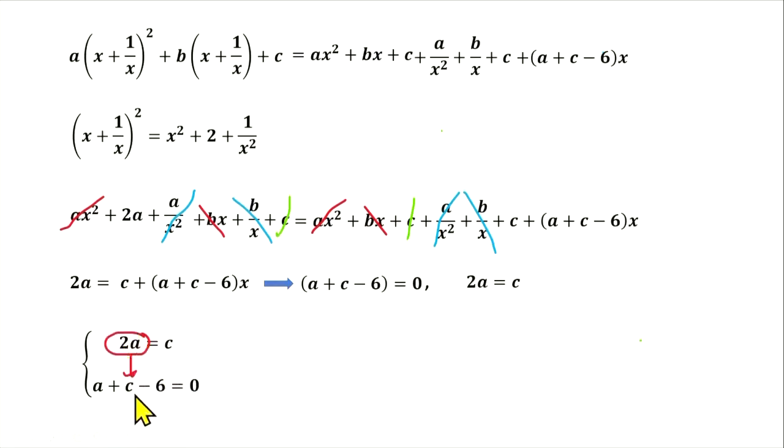We plug in instead of c, 2a. We will have on the left 3a minus 6 equals 0, so from here we can find a. We plug in a to the first equation and we have c equal 4. So we found a and c.